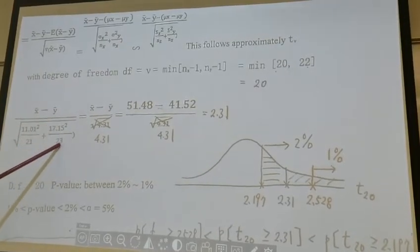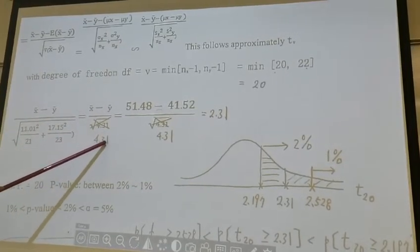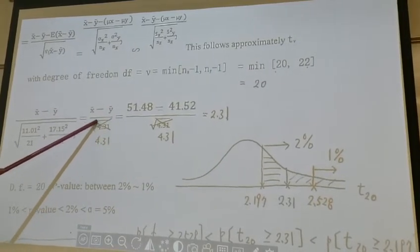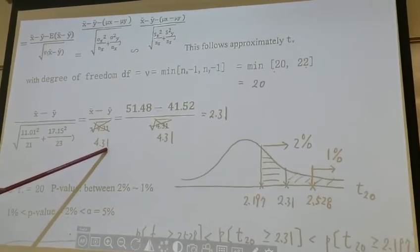And then you simplify this, you get 4.31. In the notes, this is a typo. Please cross it out, replace by 4.31. Same for here.